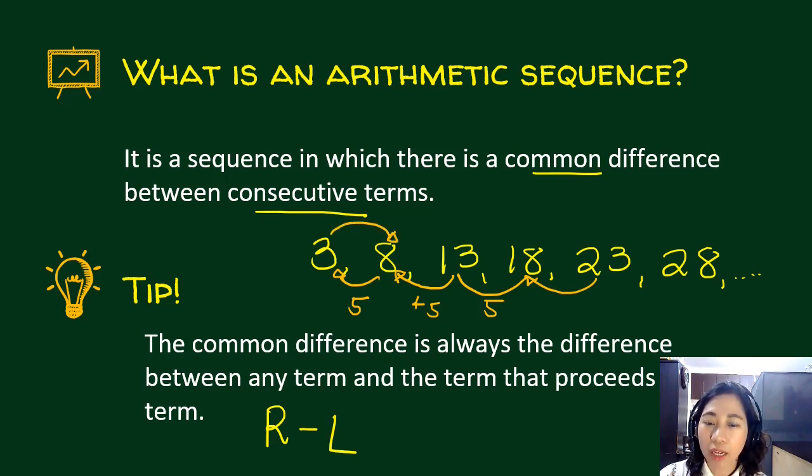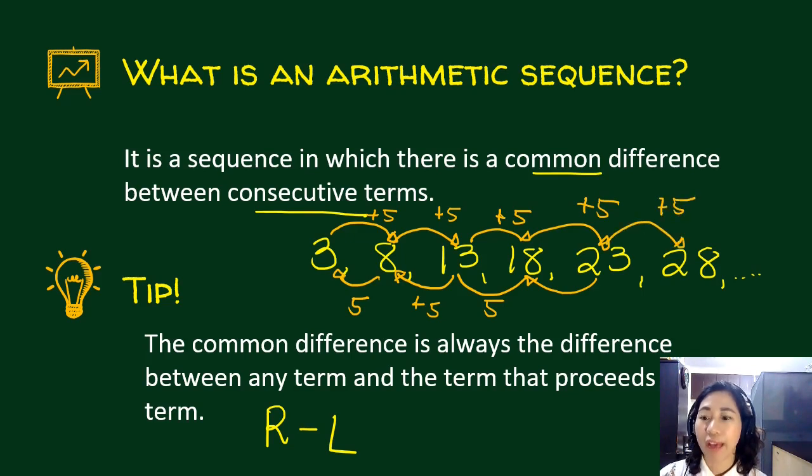Or meaning to say, the definition of an arithmetic sequence is there's a number you always add. So in this case, what is that number? Our common difference, which is equal to 5. So 3 plus 5 is 8, 8 plus 5 is 13, 13 plus 5 is 18, 18 plus 5 is 23, 23 plus 5 is 28. So our next term would be 33.